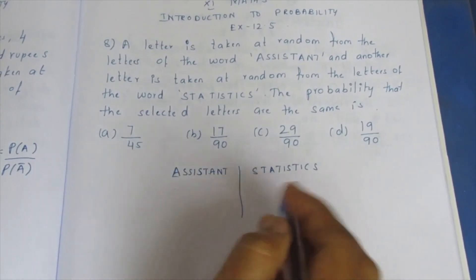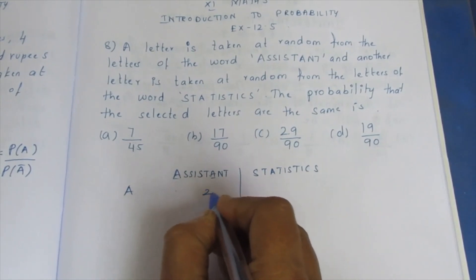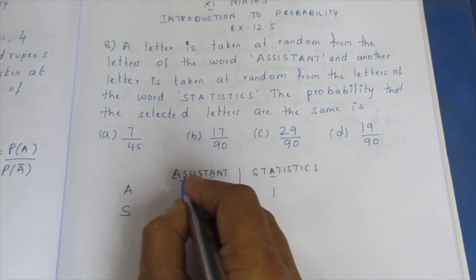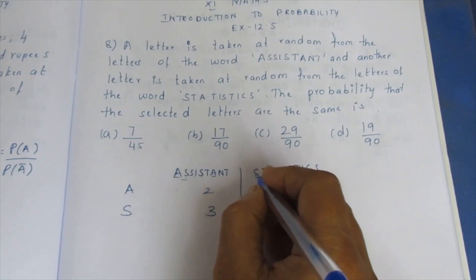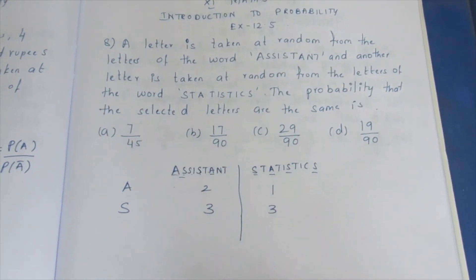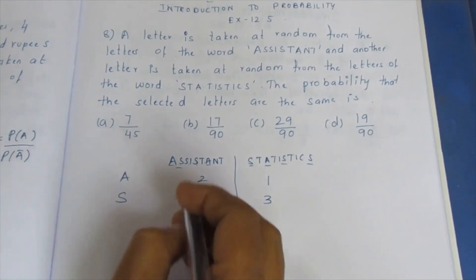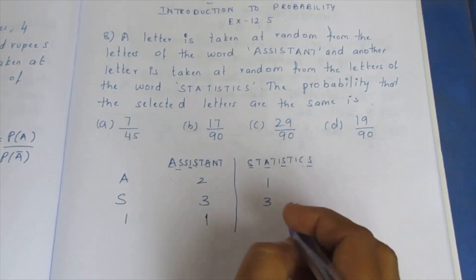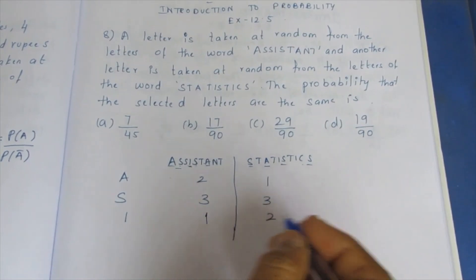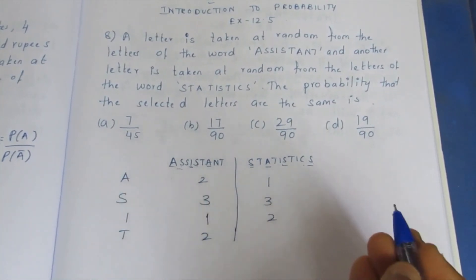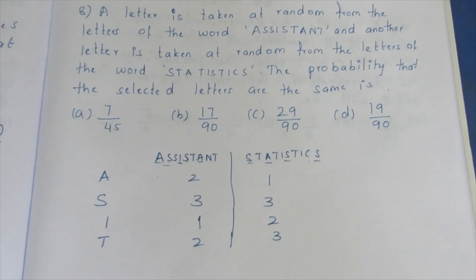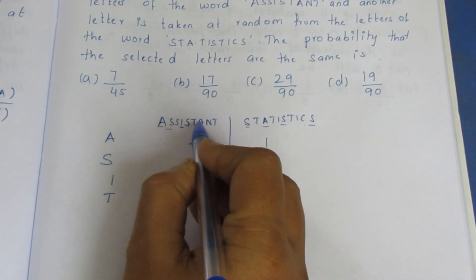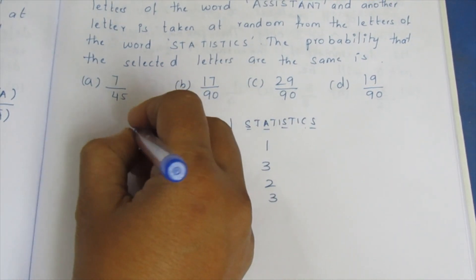First, let's identify the common letters. A is the same, A is the same — so 2 A's are the same. S is the same, S is the same, S is the same — 3 S's are the same. Now I will write the letters and count them: 1, 2, 3, 4, 5, 6, 7, 8, 9. So the total in ASSISTANT is 9.